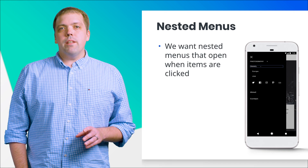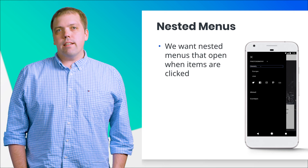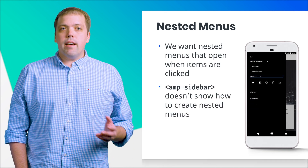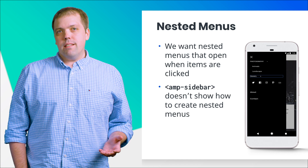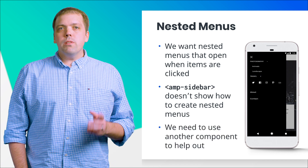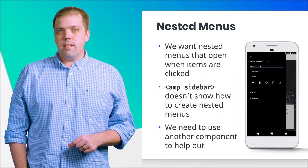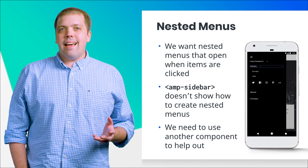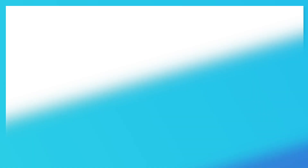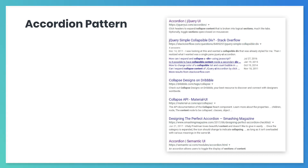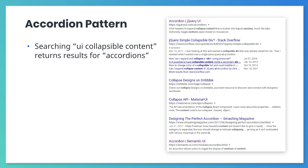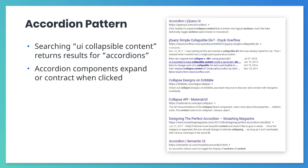We want nested menus that open when items are clicked. The documentation for AMP Sidebar doesn't explain how to implement a nested submenu, so we'll need to find another component that we can use in conjunction with AMP Sidebar — something that gives us the ability to add a collapsible submenu. If we search online for UI collapsible content, we see several results for something called an accordion. Accordion components expand or contract when they're clicked. That is exactly what we need.